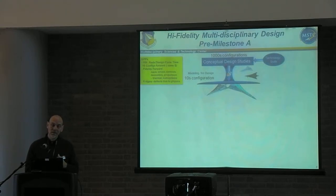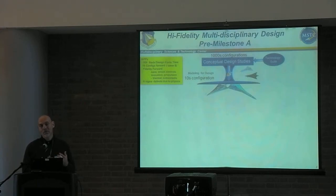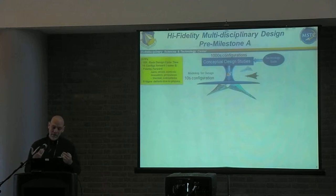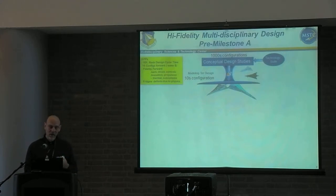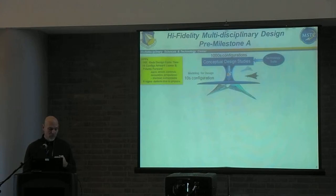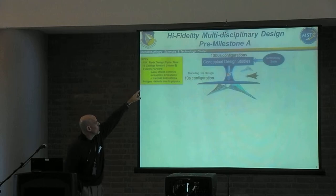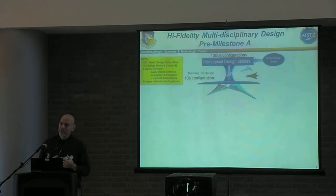A lot of the configurations and technologies we're trying to evaluate do not appear in historical databases — they're new configurations: a hypersonic vehicle, a joined-wing vehicle, a tailless supersonic vehicle. There's no historical data to tell us how they can perform. So what we want to do is bring tens of configurations forward for detailed or preliminary design assessment based on physics, instead of just one or two as industry does today. We want to reduce design cycle time and bring 15 configurations forward with the same resources.